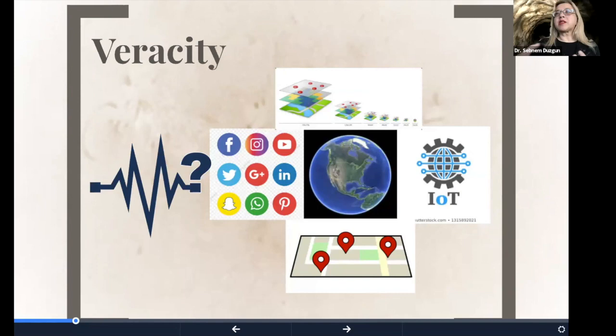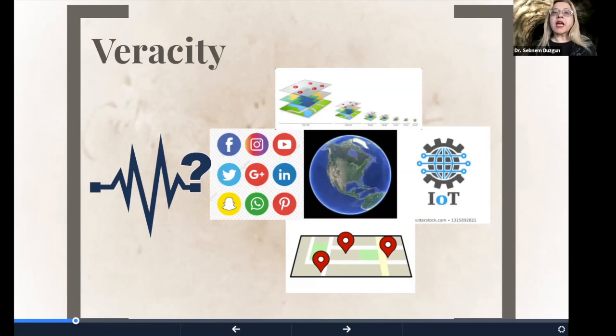So value comes from the new algorithms that we've been also handling because the computational power and the new methods that has been developed is helping us to develop innovative ways of visualizing it. And visualization is really powerful for extraction information. We can analyze patterns and trends with machine and statistical learning. And I'll show some examples of it. And even we can do predictions by using deep learning algorithms. And I will show how we are implementing this. And I will demonstrate how we are implementing this in geothermal exploration case.